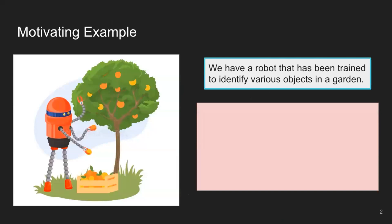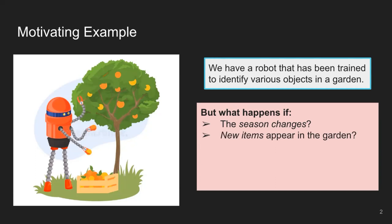Let's start off with a motivating example about what we mean by the comfort zone and why it's so important to move beyond it. Let's assume we have some robotic agent that's been trained to identify various objects within a garden. Maybe it can identify trees, or perform different tasks like picking fruit off the trees. But what happens if the season changes? Now all of a sudden our fruit looks a little bit different because we've moved from summer into fall or winter, or maybe different types of fruits are blooming at different times of the year. Or what happens if new items appear in the garden — new types of fruits or vegetables — and we'd like our robotic agent to be able to adapt to those different objects within the environment.